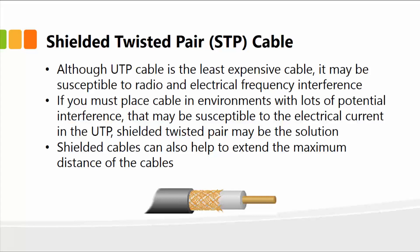The UTP cable, which is unshielded, although inexpensive, may be susceptible to attenuation. If you must place a cable in environments with lots of potential interference, the better choice is to buy a shielded twisted pair. These cables can also help extend the maximum distance of the cable. That's the basic main difference between UTP and STP cables.